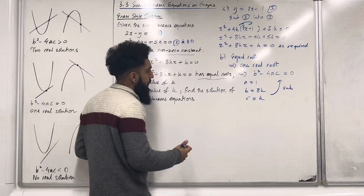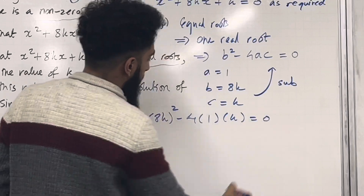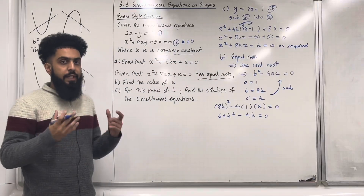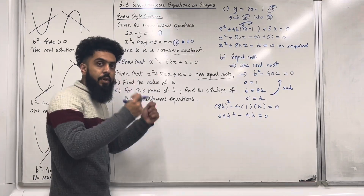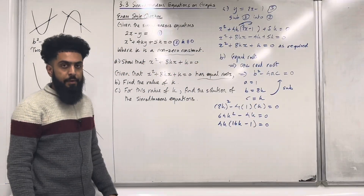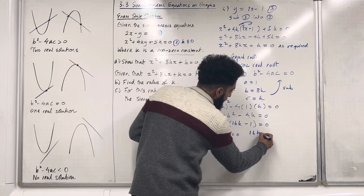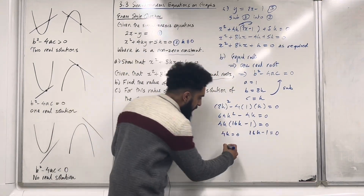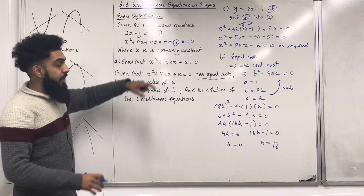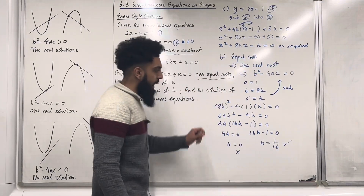Carrying out the substitution: (8k) squared minus 4 multiplied by 1 multiplied by k equals 0, giving 64k squared minus 4k equals 0. We solve for k by factorisation, taking out a factor of 4k: 4k(16k minus 1) equals 0. Setting each factor to zero: 4k equals 0 gives k equals 0, and 16k minus 1 equals 0 gives k equals 1 over 16. However, k is a non-zero constant, so we reject k equals 0 and accept k equals 1 over 16.